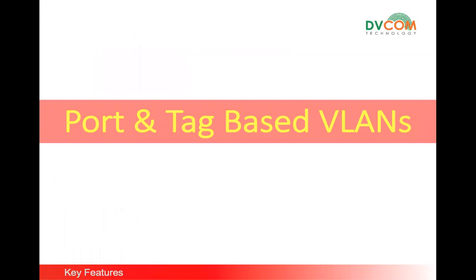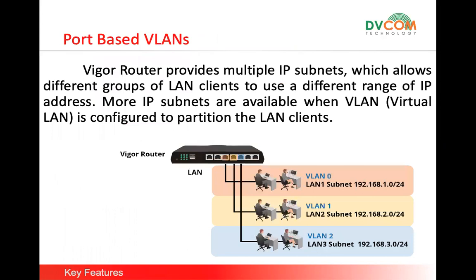The first topic is port and tag-based VLANs. In Draytek routers, by default each port can be configured into different networks — this is port-based VLAN. The router provides multiple IP subnets, which allows different groups of LAN clients to use different IP address ranges. For example, if a customer wants separate networks for internal staff, managers, and guests, each port can be placed into a different network.